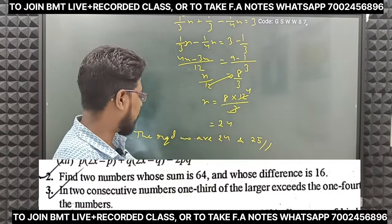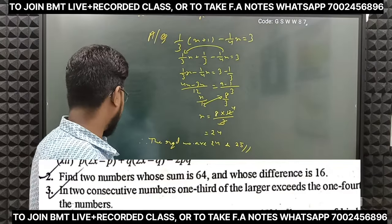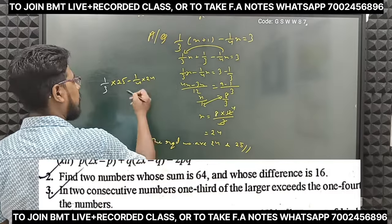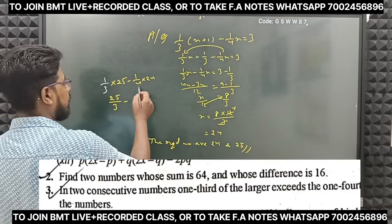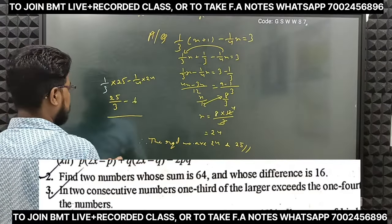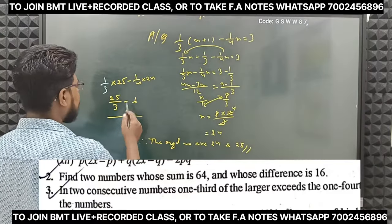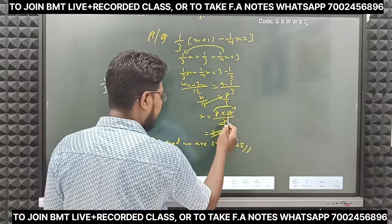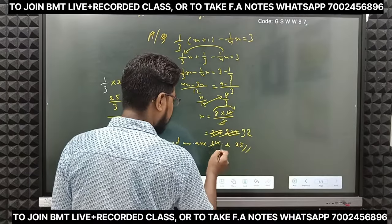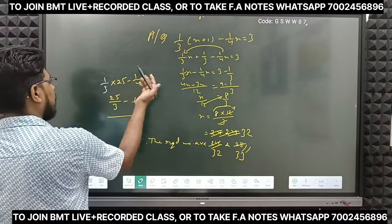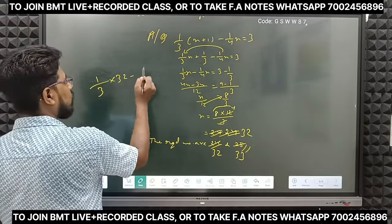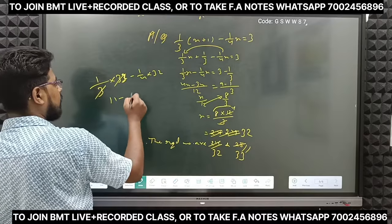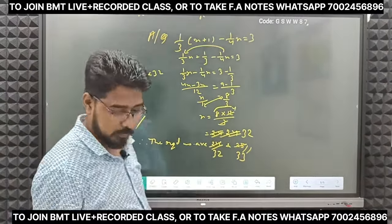Let's verify against the question. One third of the larger — one third of 25 — minus one fourth of the smaller. Wait, there is an error. Eight fours are thirty-two, so x should be 32 and the next number is 33. Checking: one third of 32 minus one fourth of 33 — solving that gives a difference of three. So the correct numbers are 32 and 33.